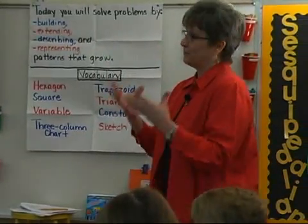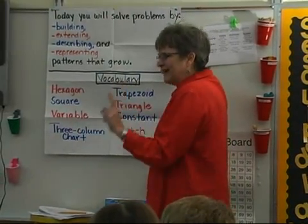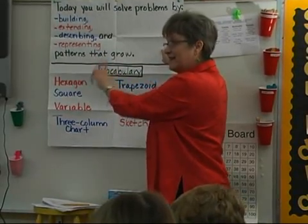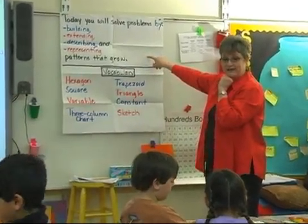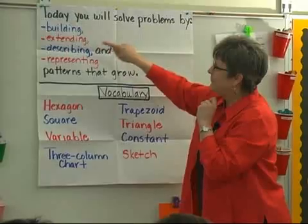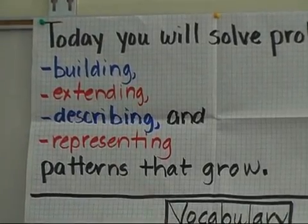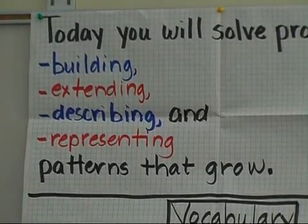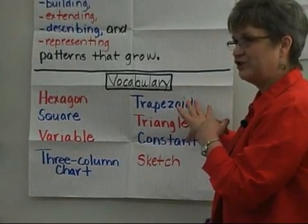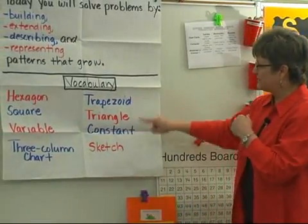So let me tell you about the problem we're going to solve today. Using your pattern blocks, very similar to the way they studied Elvis' face and predicted what he would look like if he were still alive today, we're going to build, extend, describe, and represent patterns that grow — patterns that get older over time. You're going to use the pattern blocks to do that. Some of the important vocabulary words are hexagon, square, trapezoid, and triangle.